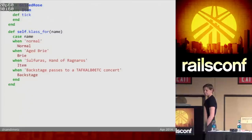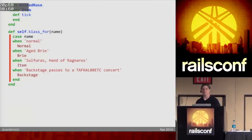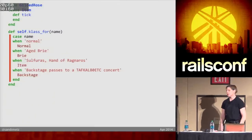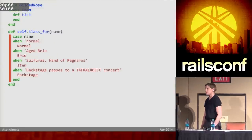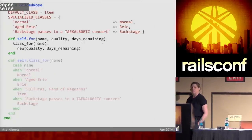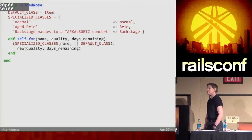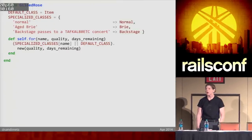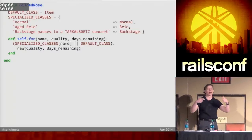I'm going to do one last thing. This case statement contains two different types of information: a set of string-to-class mappings, and the algorithm to hook them up. Case statements are meant for business logic, and this doesn't really feel like business logic — it feels like configuration information. So I'm going to extract the configuration data into a hash, and then change the algorithm to use that hash. Now the hash can change independently of the algorithm that matches things up. If you find the hash changing a lot, you might make it a YAML file; if that changes a lot, you might put it in the database.